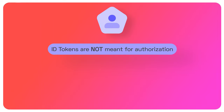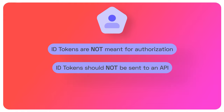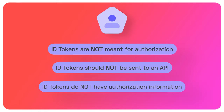Let's recap what these different types of tokens are not intended for. ID tokens are not meant for authorization — they are strictly for verifying that a user has logged in or authenticated themselves, which means they should not be sent to an API. Remember the audience claim: that audience claim is the application the user is logged into, not a separate API. So we do not send ID tokens to separate APIs. ID tokens also do not have any authorization information included inside of them, so they would basically be useless to send to an API anyway.